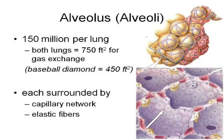Each lung contains approximately 150 million alveoli, individual little sacs. If you spread all those out, you would have almost twice the size of a baseball diamond - not the whole baseball field, but just the diamond, just the infield. That's a lot of surface area.